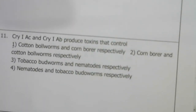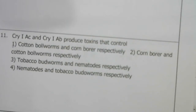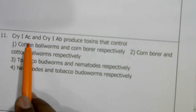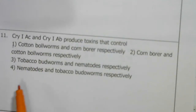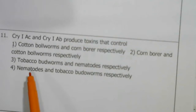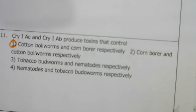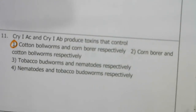Cry1Ac and cry1Ab produce toxins that control: cry1Ac is for cotton bollworm, and cry1Ab is for corn borer. So the answer is the first option.